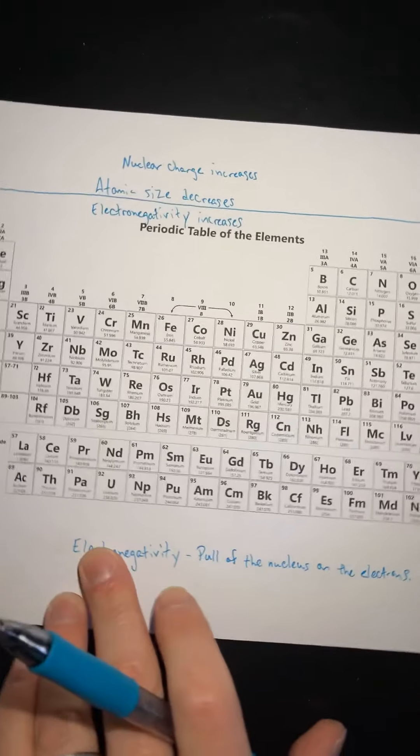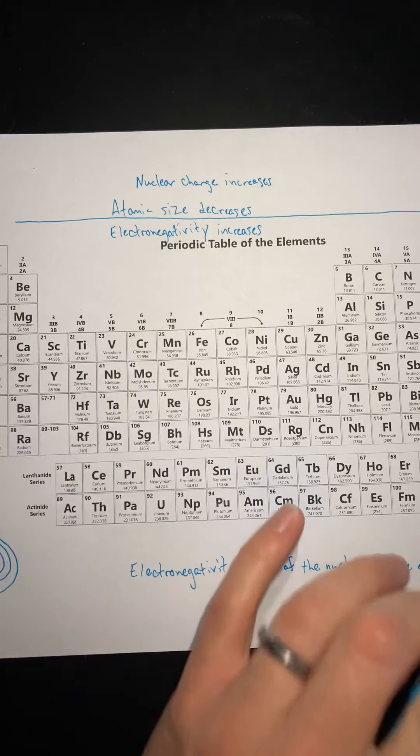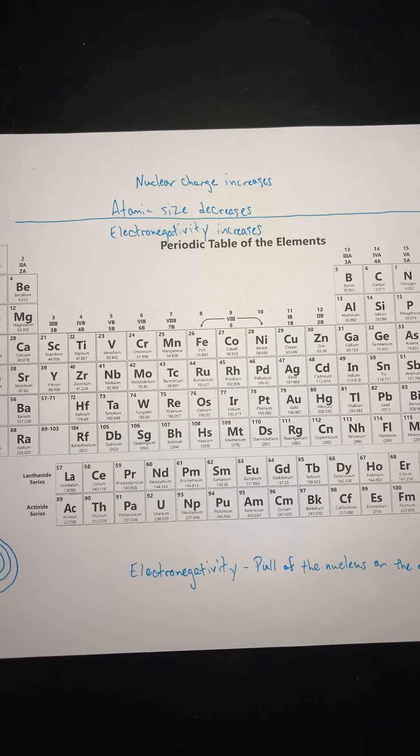So, if you want to kind of an easy way to think of this, wherever the atomic size is small, electronegativity is high. Wherever the atomic size is large, that's where the electronegativity is low.